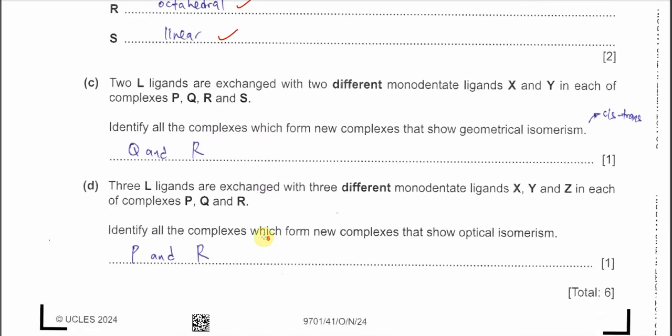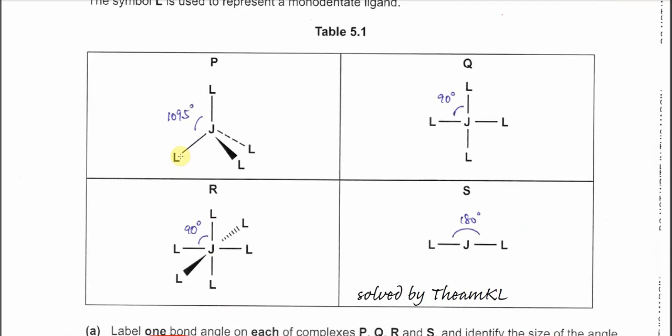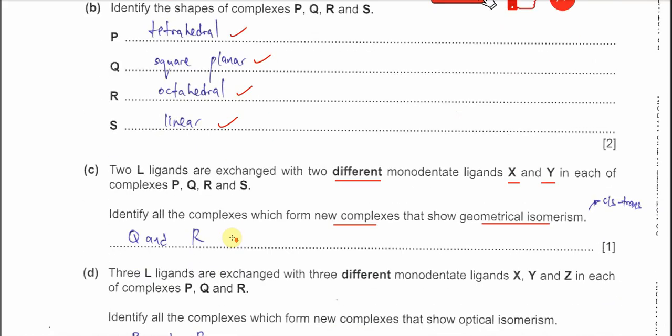Part C and D are quite complicated so I'll try to use some drawings to let you see how to form these isomers. Two L ligands are exchanged with two different monodentate ligands X and Y. Identify all complexes which can form new complexes that show geometrical isomers. The answer is Q and R. Q is square planar, R is octahedral.